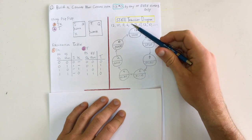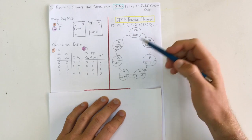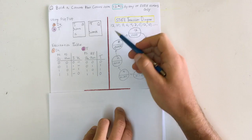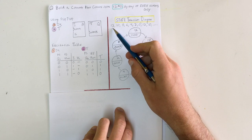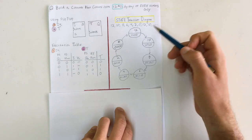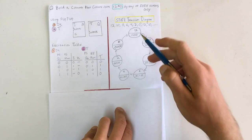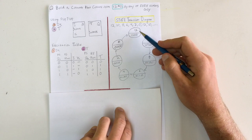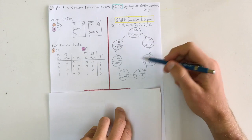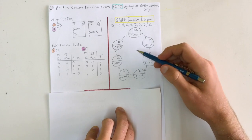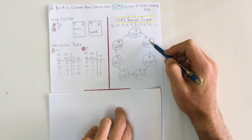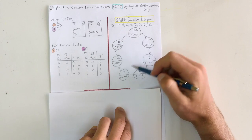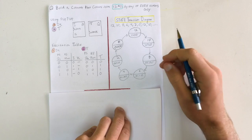The first step is to design our state transition diagram. Our counter counts from 12 to 0, going from 12 to 10 to 8 to 6 to 4 to 2 to 0 — even numbers only — and when we get down to 0 we start again at 12. This diagram shows exactly that: states 12, 10, 8, 6, 4, 2, and 0, showing how they transition. Below the diagram I've also left the binary representation to make building our state table easier.